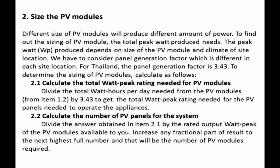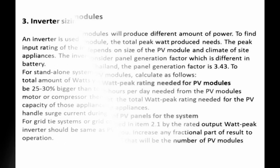Step 2.2: Calculate the number of PV panels for the system. Divide the answer obtained in Step 2.1 by the rated output watt-peak of the PV modules available to you. Increase any fractional part of the result to the next highest whole number — that will be the number of PV modules required.